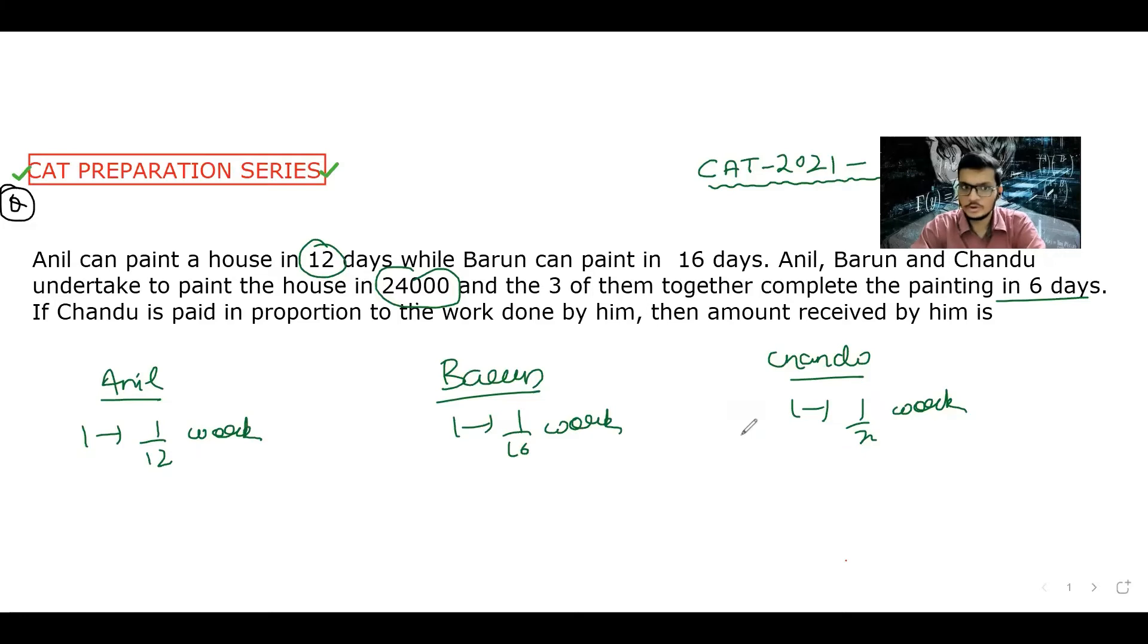Now, they have a contract to paint the house for 24,000 rupees and finish the work in 6 days. They will work together, and together they can paint the house in 6 days.